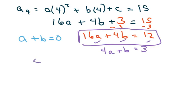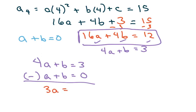Now I'm going to write my system of equations. And I'm just going to subtract here and eliminate my b. So the b will get eliminated and I get 3a equals three. So a equals one.